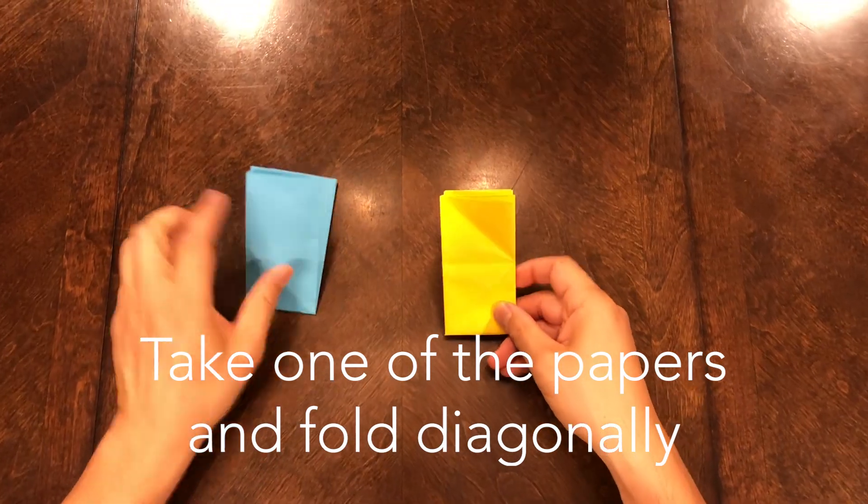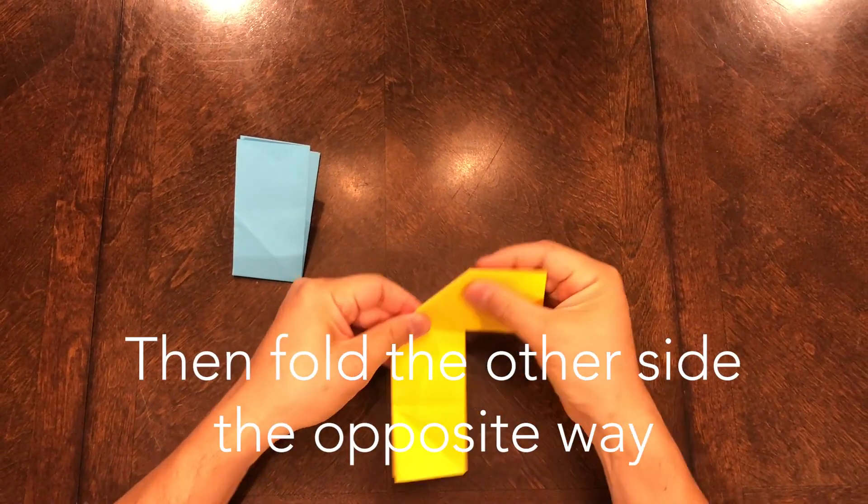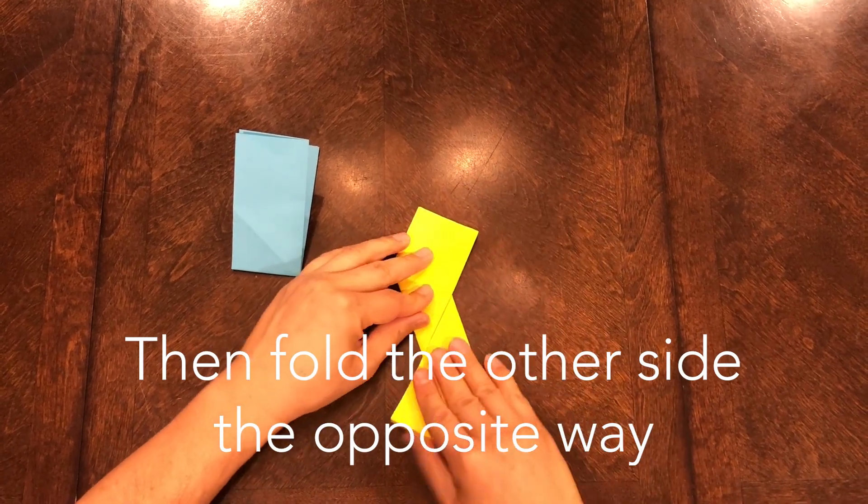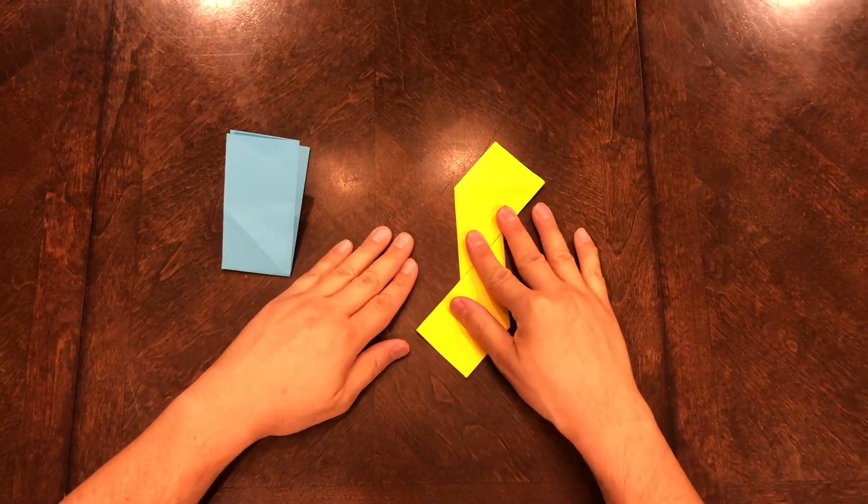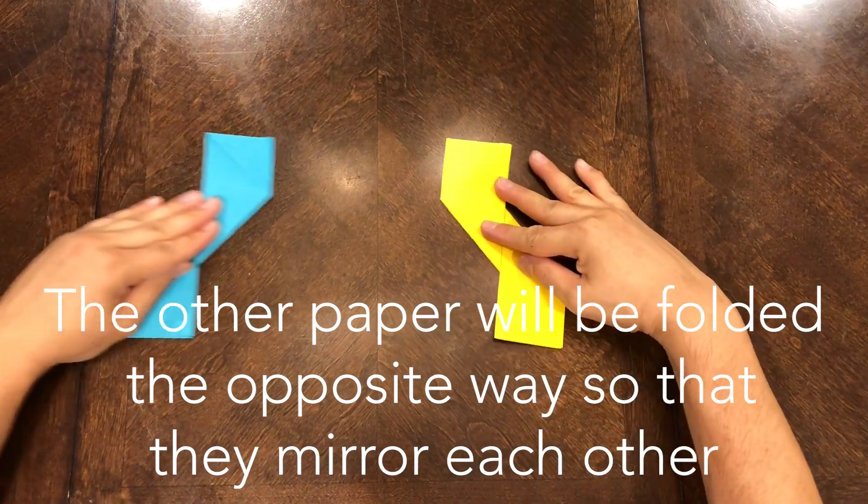Take one of the papers and fold diagonally. Then fold the other side the opposite way. The other paper will be folded the opposite way so that the pieces mirror each other like this.